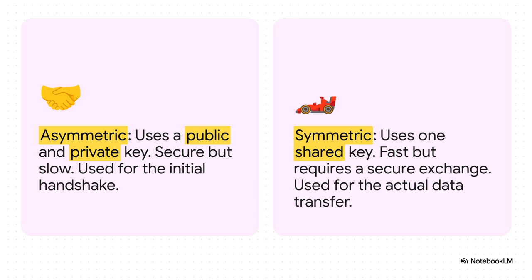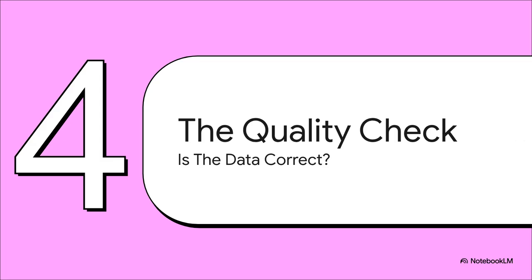This is where it gets really clever. That first handshake uses a slow but incredibly secure method called asymmetric encryption. It's got two keys — a public one for locking the box and a private one for unlocking it. They use this super heavy-duty method for just one thing: to safely agree on the secret key for a much, much faster method called symmetric encryption. It's kind of like using a super secure armored truck just to deliver the keys to a ridiculously fast sports car.